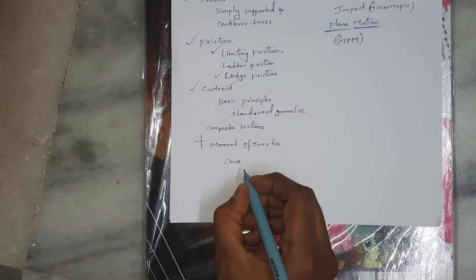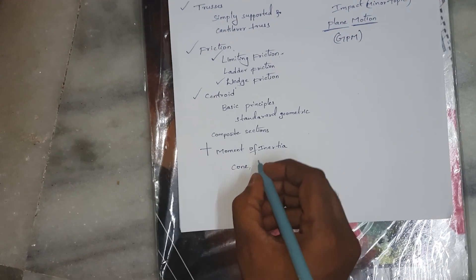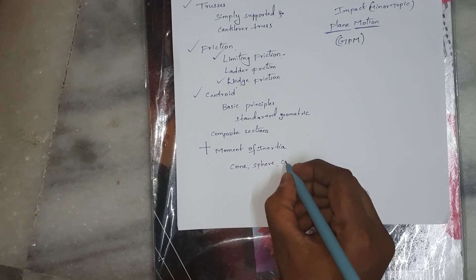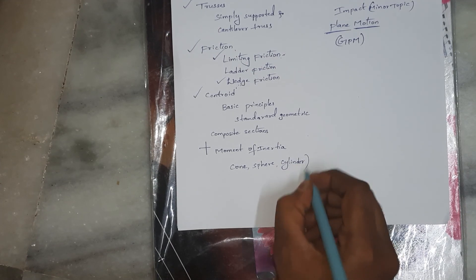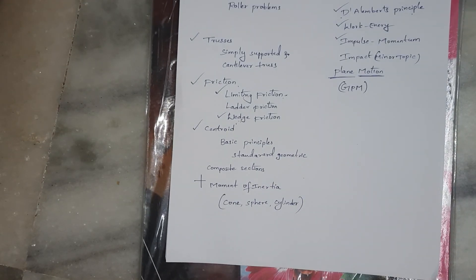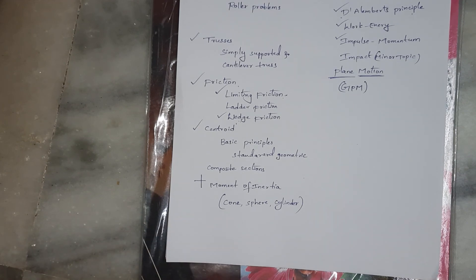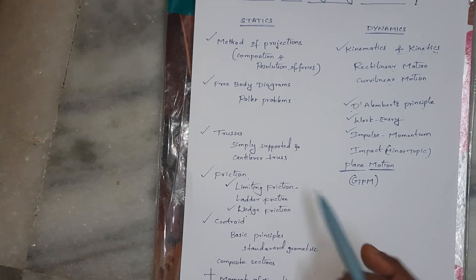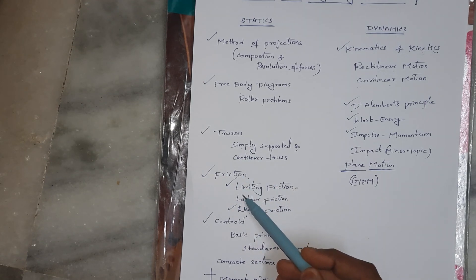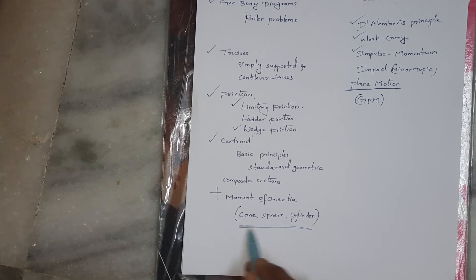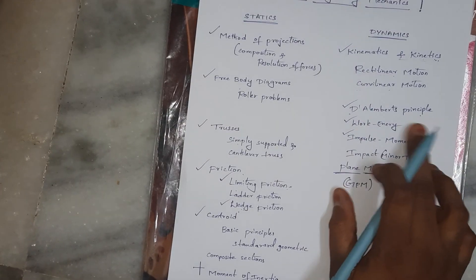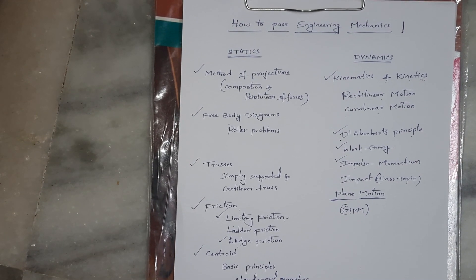Also cover Mass Moment of Inertia — specifically derivations for three solid objects: Cone, Sphere, and Cylinder. Derive the moment of inertia about their centroidal axis and other given axes. For students who just want to pass, focus heavily on Statics: Free Body Diagrams, Trusses, Friction, and Moment of Inertia derivations for cone, sphere, and cylinder, plus D'Alembert's Principle. Good luck and bye!